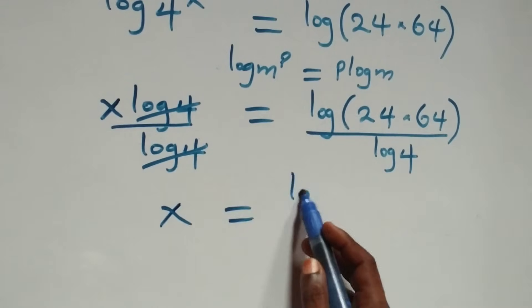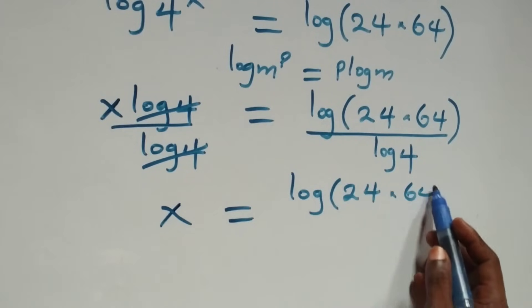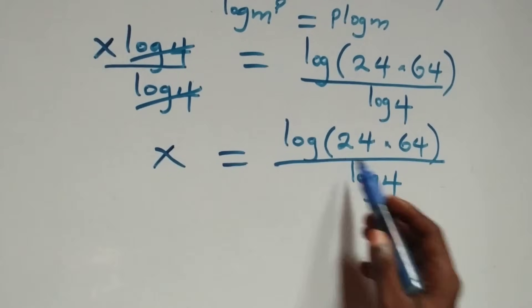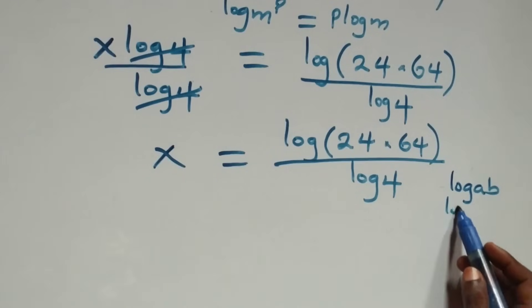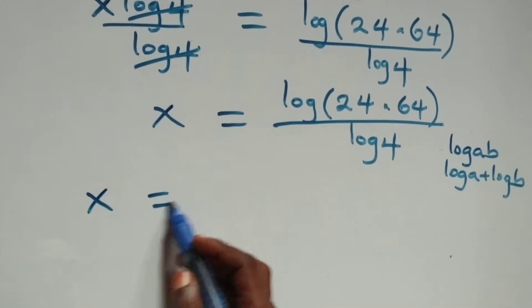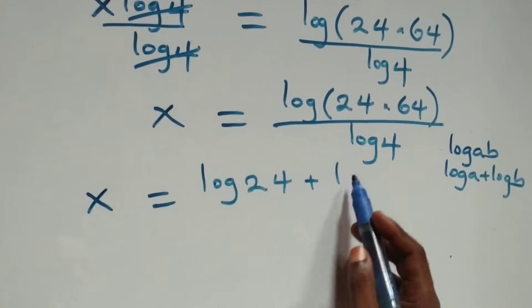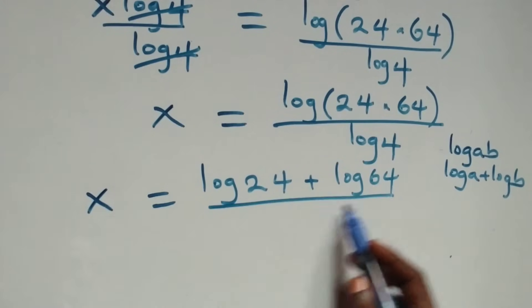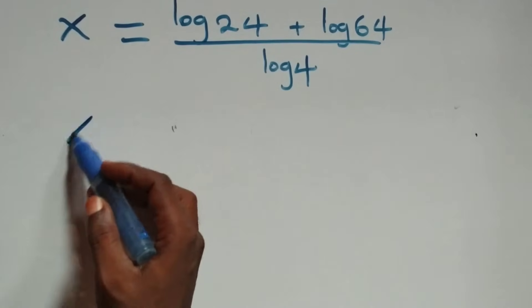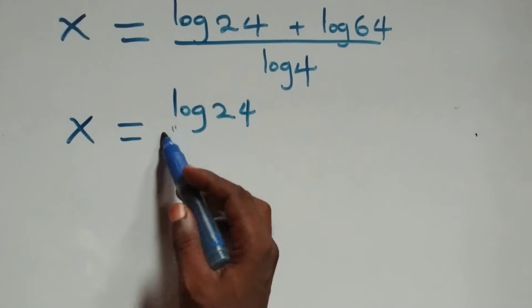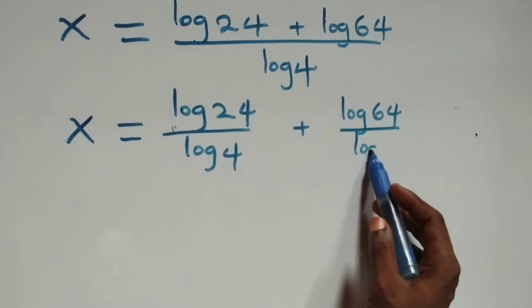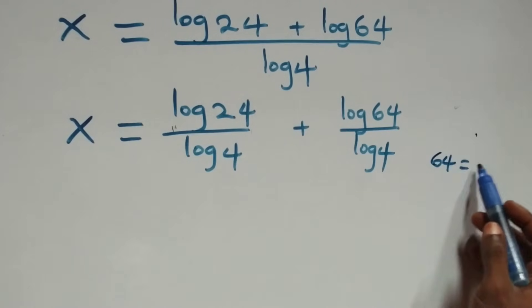This gives us x equals log of twenty-four times sixty-four over log four. Applying the log product law — log a times b equals log a plus log b — this becomes x equals log twenty-four plus log sixty-four, all over log four. We then separate into two fractions. Note that sixty-four equals four raised to power three.